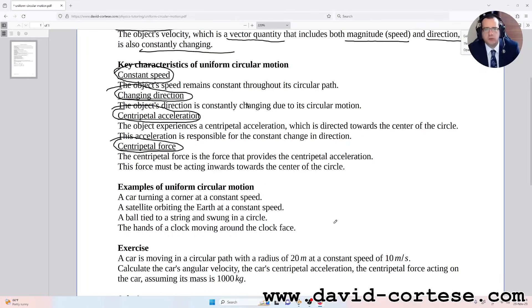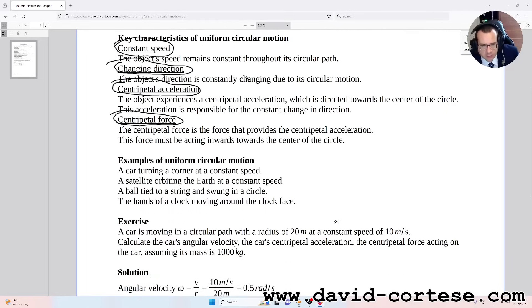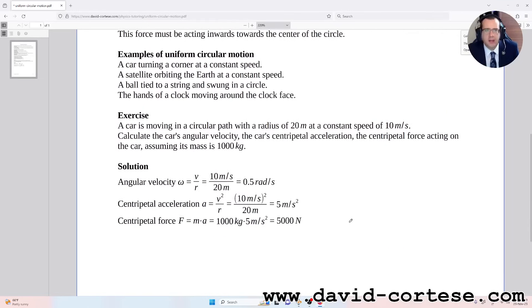Examples of uniform circular motion are a car turning a corner at a constant speed, a satellite orbiting the Earth at a constant speed, a ball tied to a string and swung in a circle, the hands of a clock moving around the clock face. Let's do an exercise together.